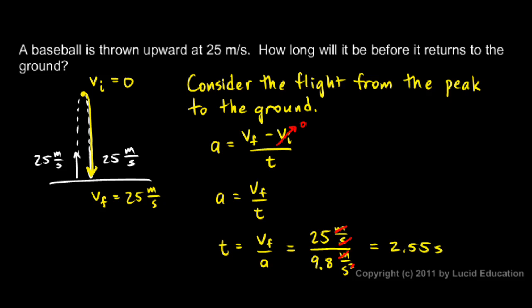Now be careful when you get to this point. It feels like you're done with the problem, but you're not quite. We just found the time for the second half of the flight. Remember, we were considering from the peak down. It went from a speed of 0 to a speed of 25. Those were the speeds we were using in this equation. If we have 0 here for the initial velocity and 25 for the final, then this time is the time that it took to get from 0 to 25, which is just the second half of the flight.